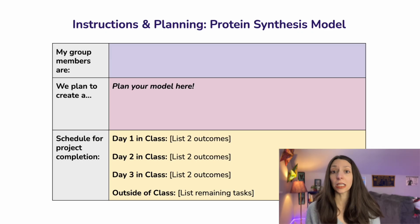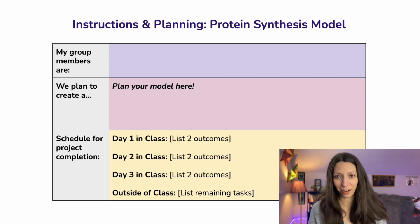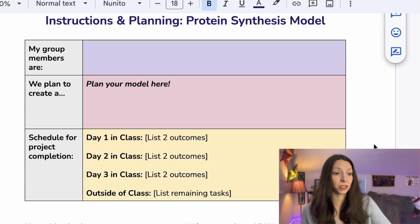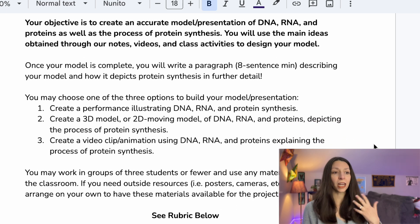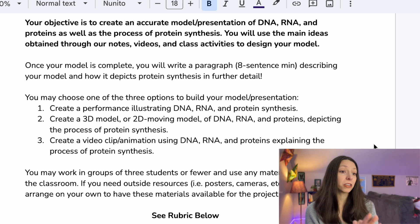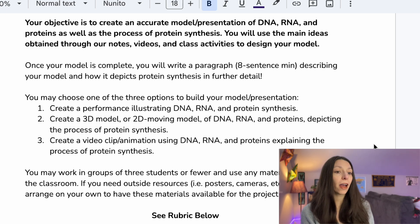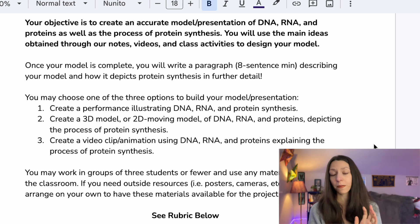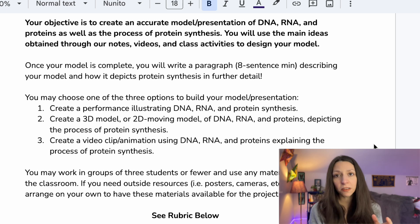The very first thing we would do is create a plan for the project. Here's a copy of the document students would fill out. The objective is to create an accurate model or presentation of DNA, RNA, and proteins as well as the process of protein synthesis. Students use the main ideas obtained through notes, videos, and class activities to design their model. Once complete, they write a paragraph describing their model and how it depicts protein synthesis — explaining what components of their model represent what parts of protein synthesis.